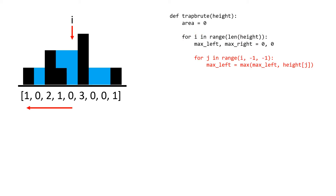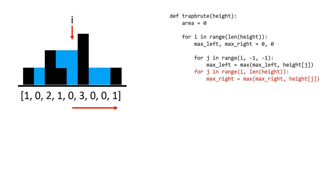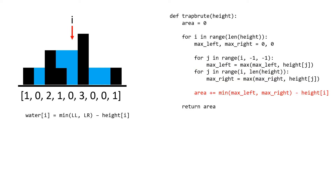We calculate the largest left with an inner for loop running from position i to the left. At each iteration we update the largest left variable by taking the max of the j-th position and the current max left. We start this loop at position i to prevent a negative result when applying our water formula. We do the same thing going from position i to the right to calculate the max right, again starting at i rather than i plus one. Finally we apply our formula — taking the minimum of max left and max right and subtracting the height — and add this to the running total called area, which we return at the end.